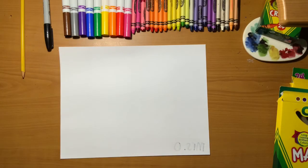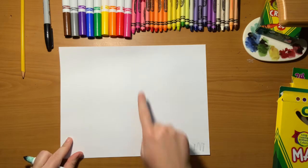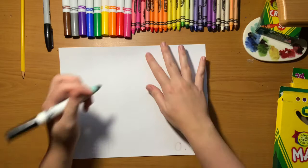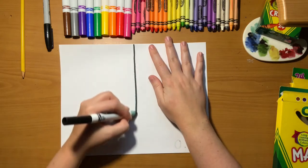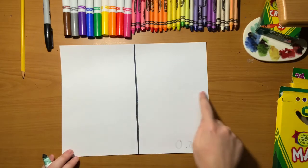Next, we're going to split our paper into four sections, four rectangles. First, you're going to draw a line straight down the middle. It does not have to be perfect. You do not need to use a ruler. Just draw a line straight down near the middle.